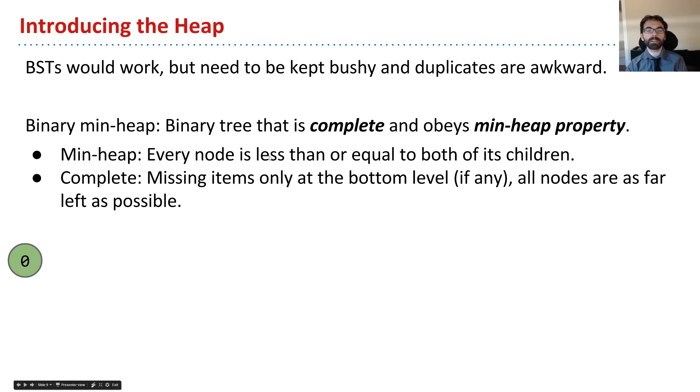So what do these two terms mean? The min-heap property means that every node is less than or equal to both of its children. That's a simple idea. The other idea is a little more complicated, it's known as completeness. We'll say that a tree is complete if it's missing items only at the bottom level, if anything is missing at all, and all nodes are as far left as possible. This isn't exactly a mathematical definition, but what it's trying to do is capture the notion of bushiness, and I'll give a few examples because the idea here is very intuitive from examples.